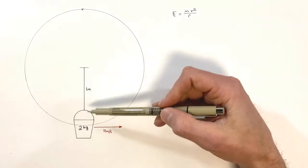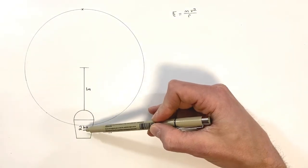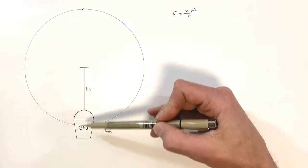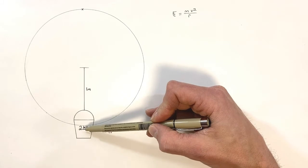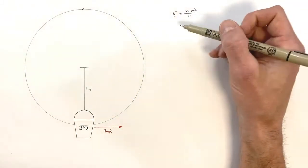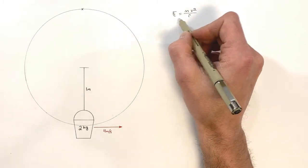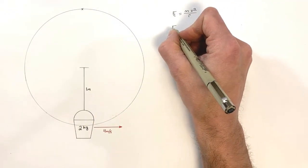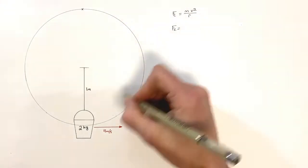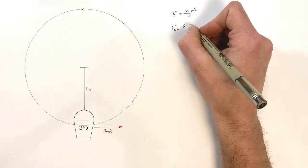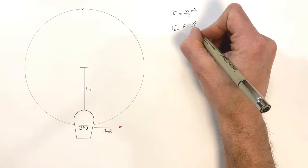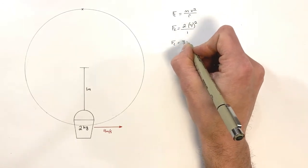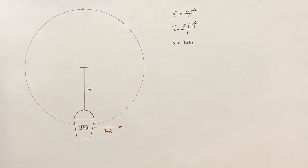The numbers are laid out for us: a mass of two kilograms, a velocity of four meters per second, and a radius of one meter — measured from the center of the circle to the center of mass. Treating this simply as a point mass on the end of a string, the centripetal force equals two kilograms times four meters per second squared over one meter, which equals 32 newtons.